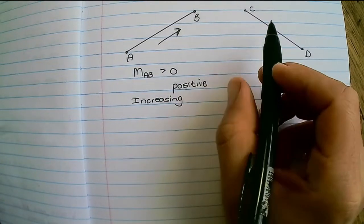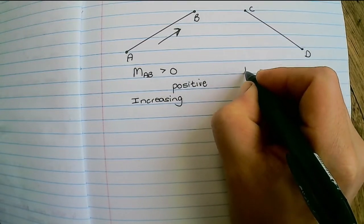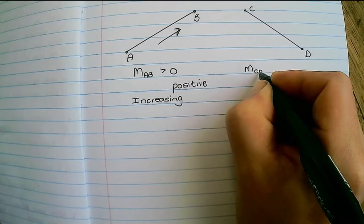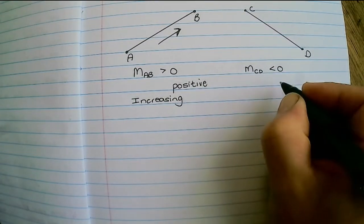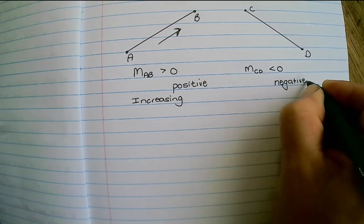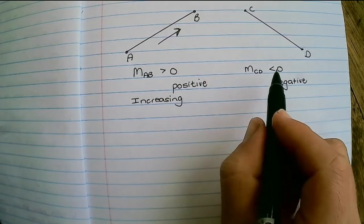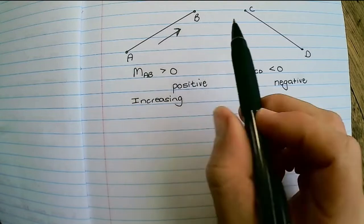Now similarly, we can look at the line CD. We can say that the gradient of the line CD would be smaller than zero. In other words, we would say that it is negative. And how we know that is that we start from the left - remember we read a graph from left to